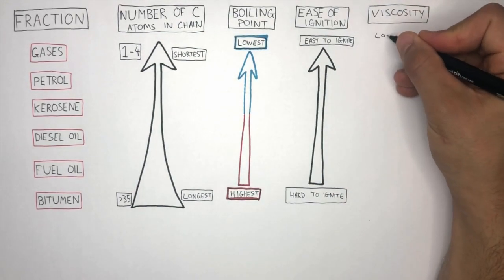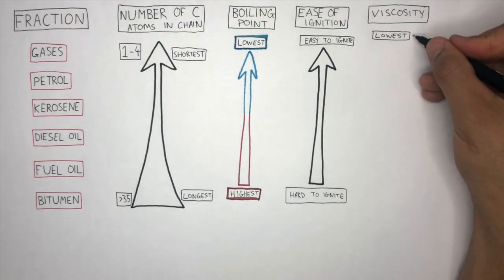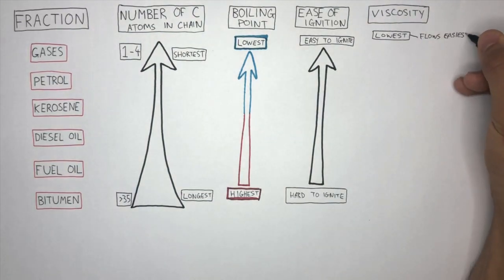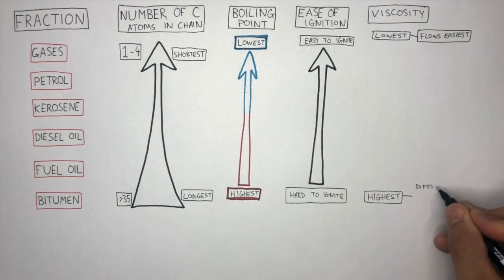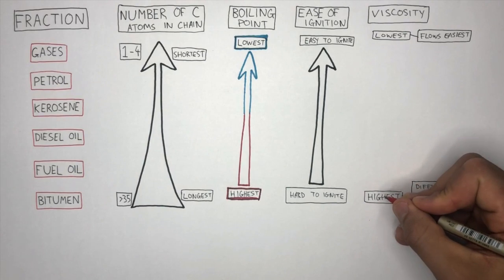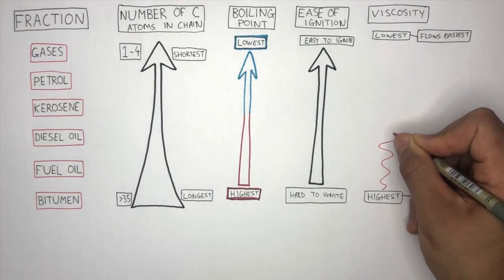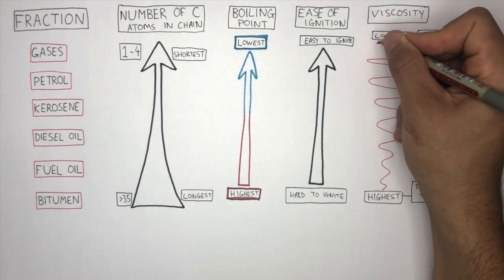Gases have the lowest viscosity. This means they flow the easiest. Bitumen has the highest viscosity. It's very difficult for bitumen to flow. Overall, the smaller the hydrocarbon chain, the less viscous the hydrocarbon is.